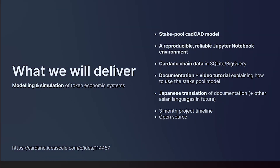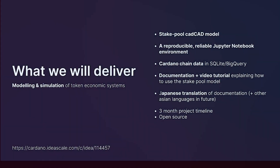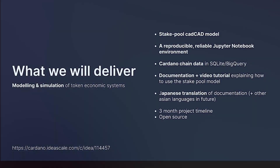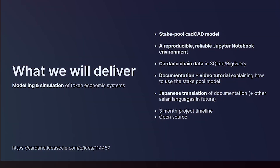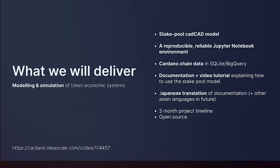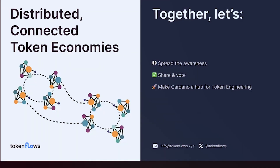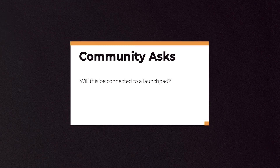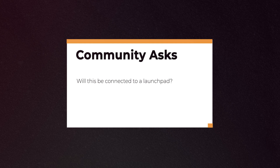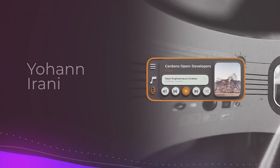We will also provide documentation and a tutorial video covering the design, implementation, documentation, and use of the model. We will translate the documentation into Japanese as the first non-English language, with a future plan to support numerous Asian languages. To change the financial operating system, we need to understand how tokens can incentivize and disincentivize collective behavior.